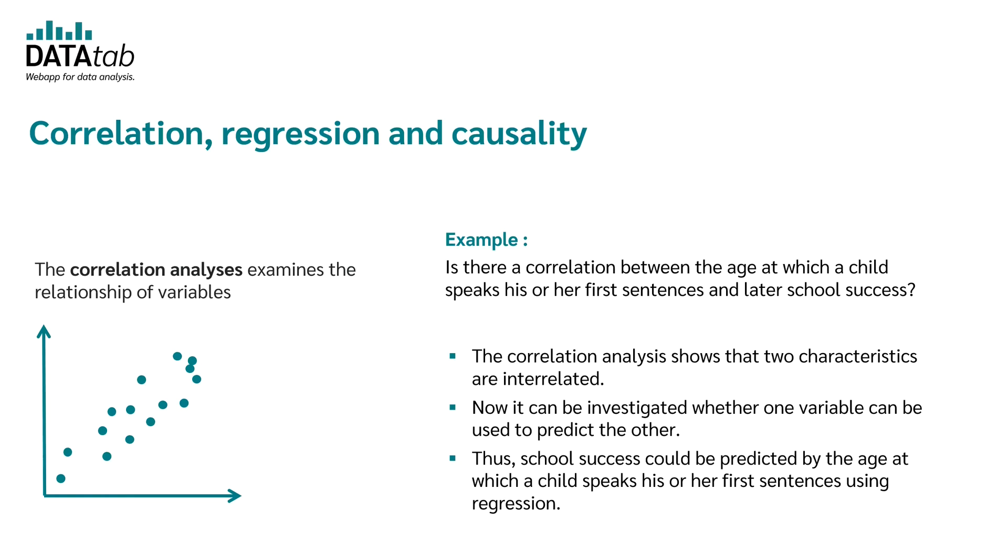Now it could be investigated whether one variable can be used to predict the other one. Thus, school success could be predicted by the age at which a child speaks his or her first sentences using regression.